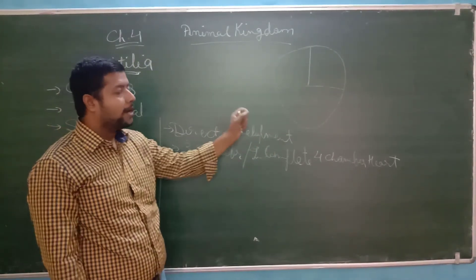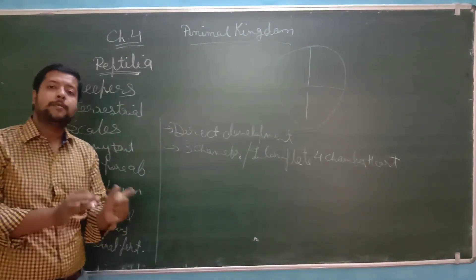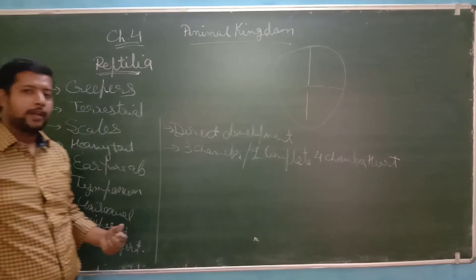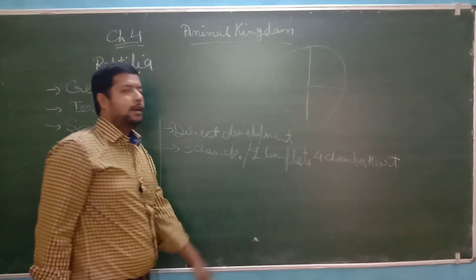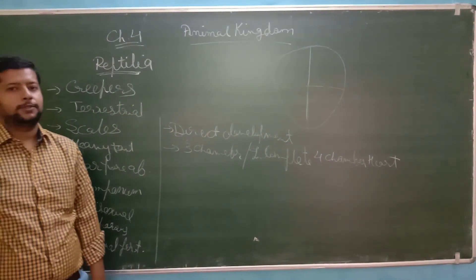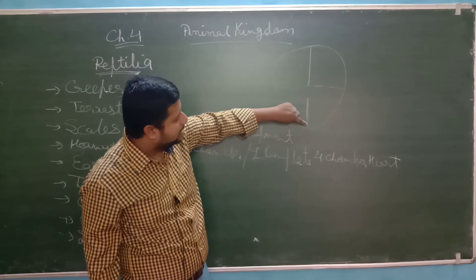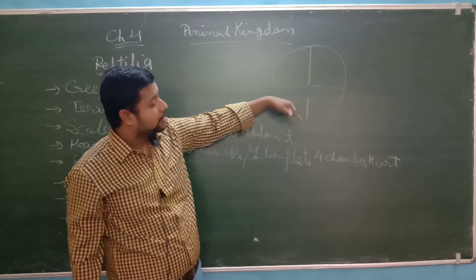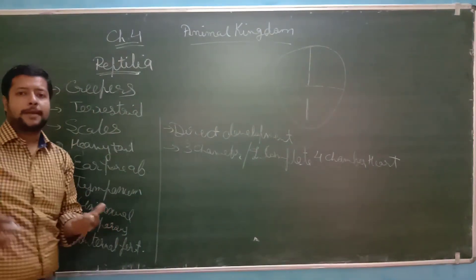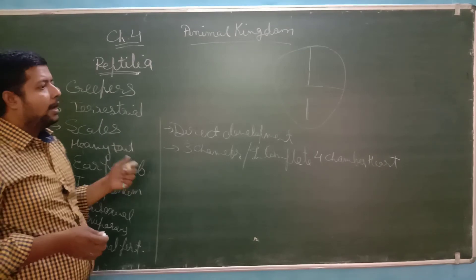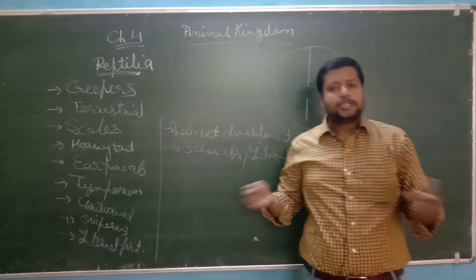Reptilia generally have a three-chambered heart — incomplete. But in the case of crocodiles and alligators, a four-chambered heart is found, similar to birds and mammals. This is an example of evolution. In the three-chambered heart, the ventricle has an incomplete septum, meaning the septa is not complete.